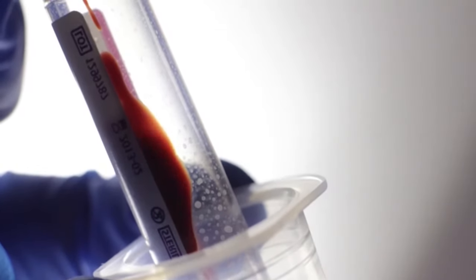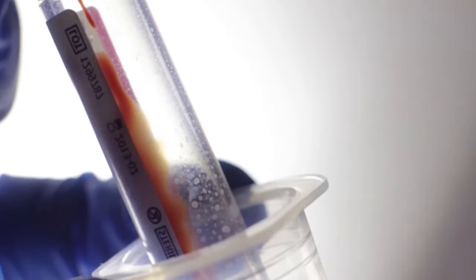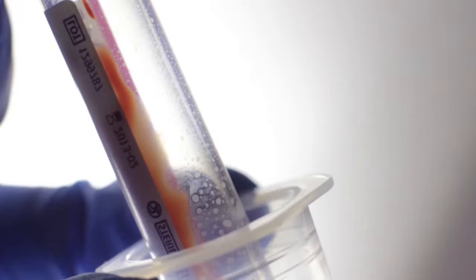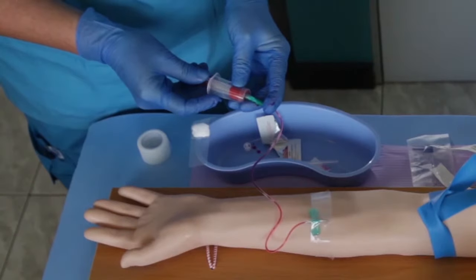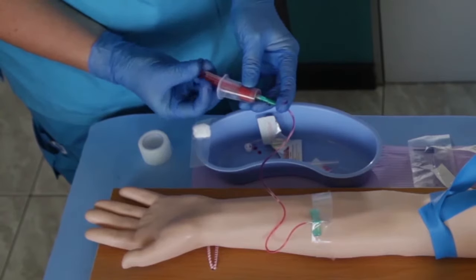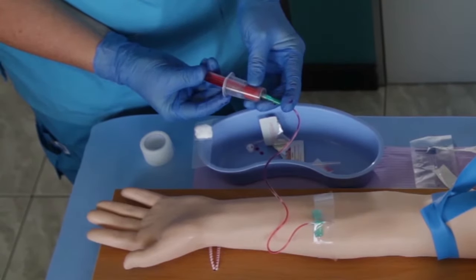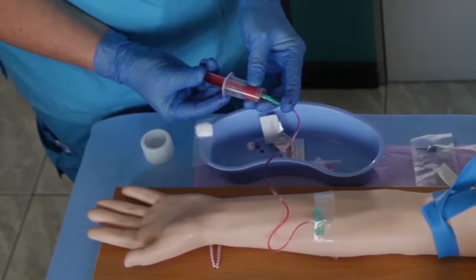Firmly press the vacutainer tubes into the vacutainer hub and fill the tubes in the correct order. It is unlikely that the butterfly needle will slip out of the vein. Allow the tube to fill and then remove it from the hub when the blood flow stops. Remove the filled tube by holding the hub securely and pulling the tube off the needle inside the hub.